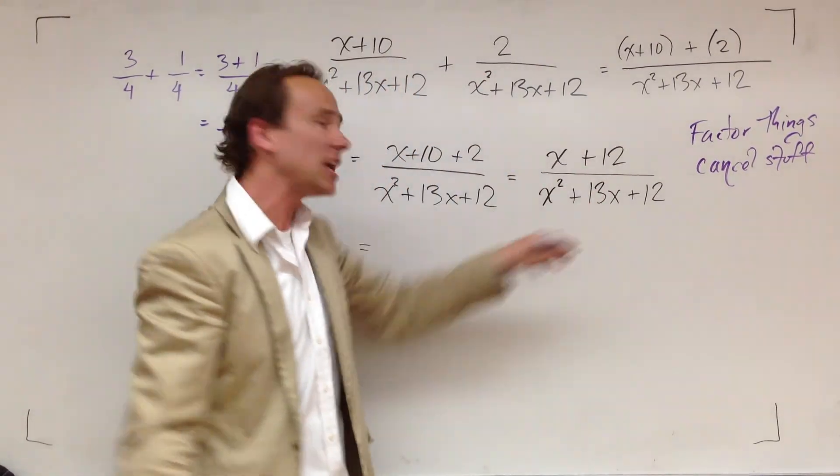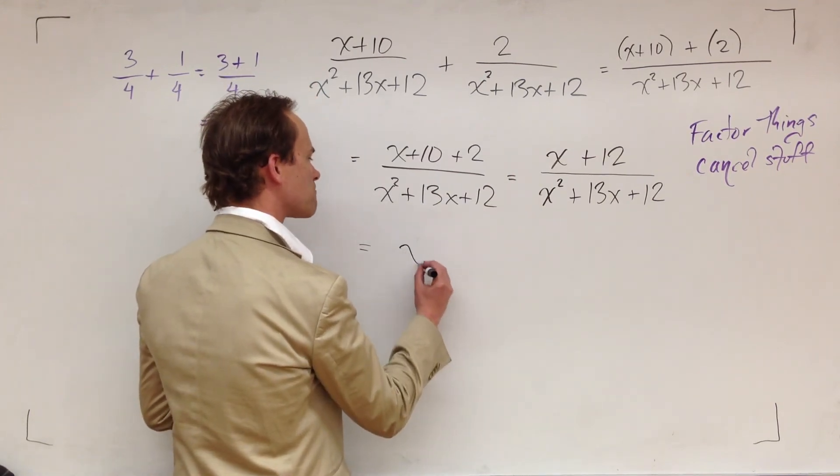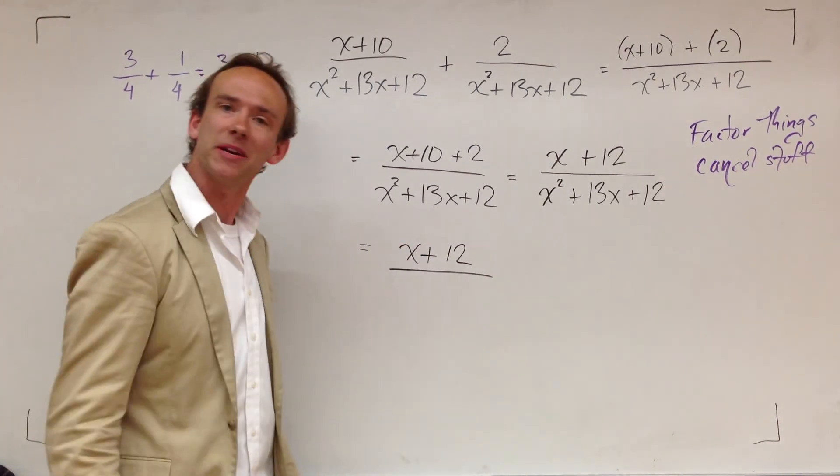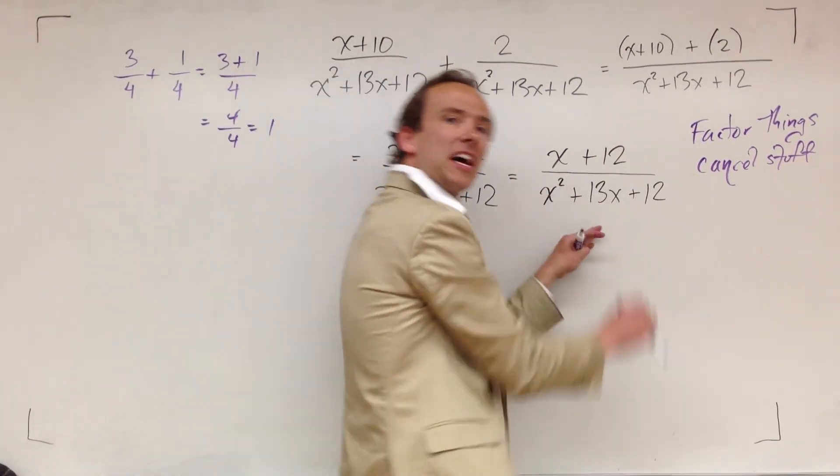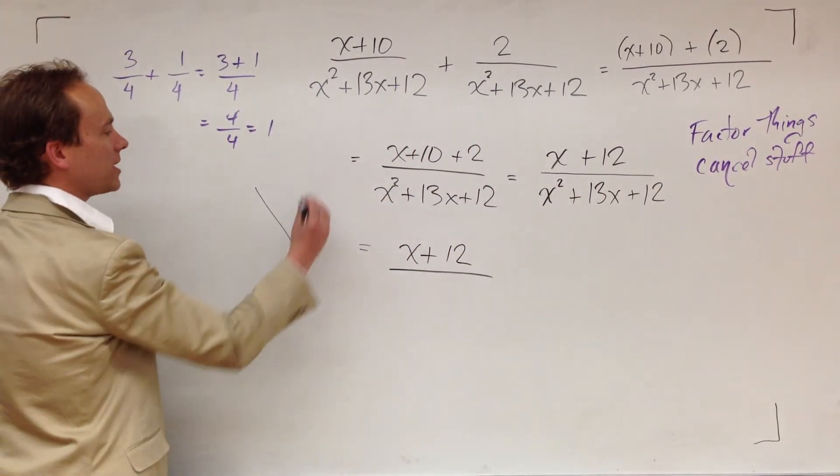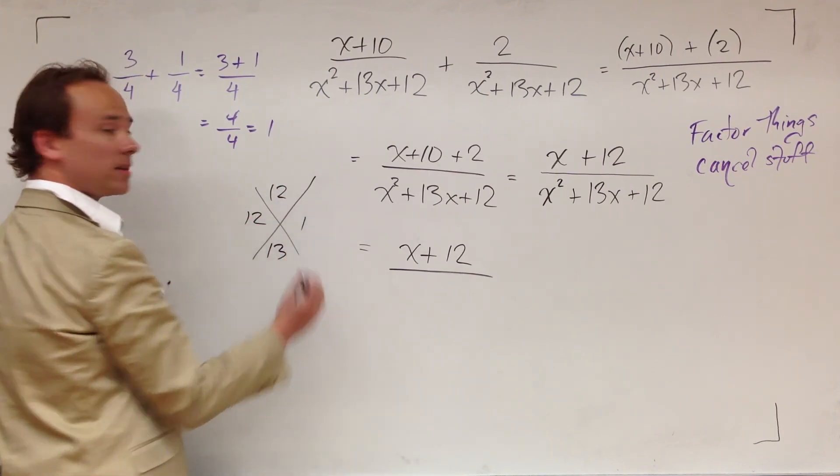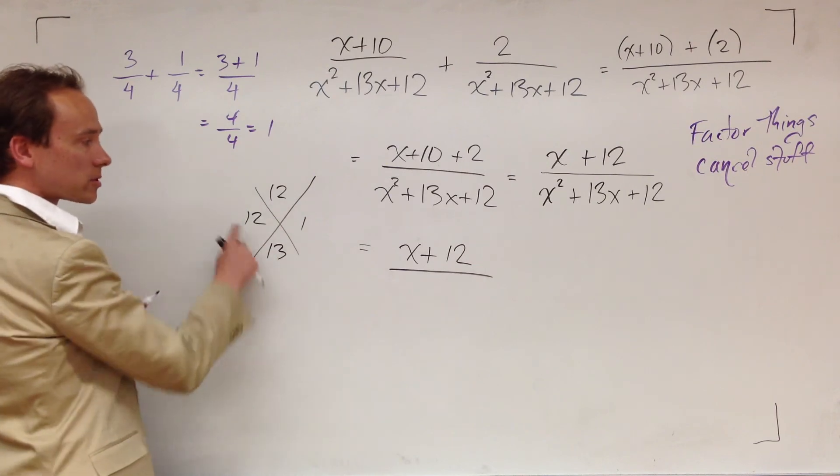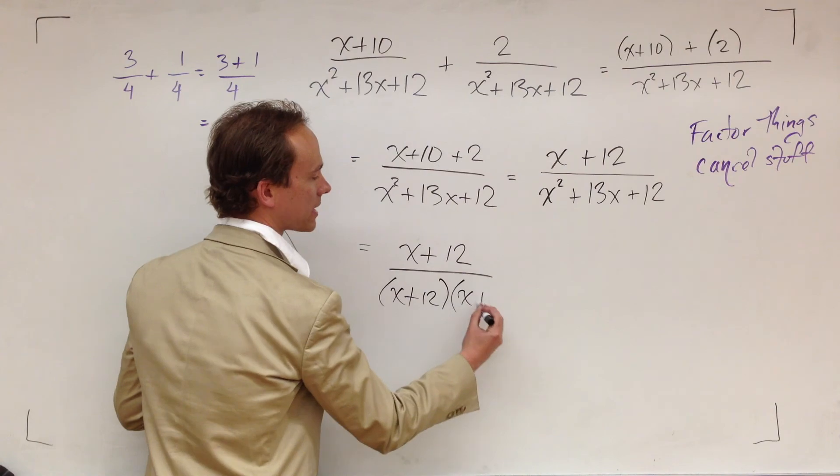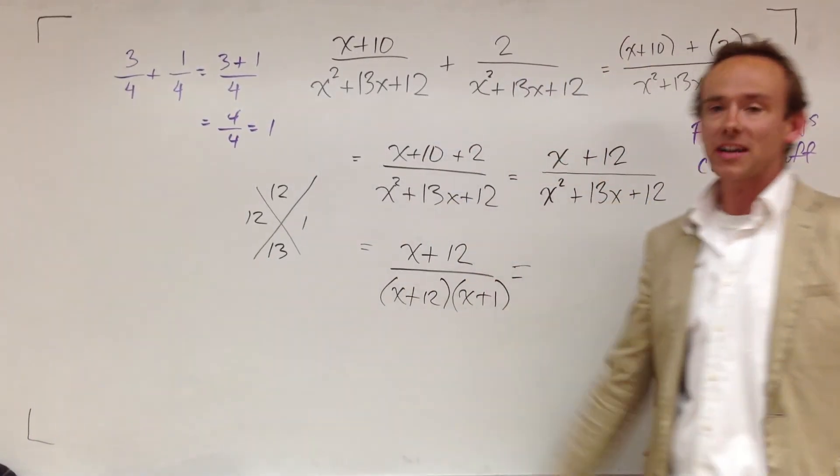I'm not going to worry about factoring the denominator because I'm starting on the numerator. I'm looking at x plus 12 and I'm saying, can't factor that any further. Now I'm going to focus on the denominator. This is a trinomial, so I'm going to hit it with an x marks the spot. The solution to that is 12 and 1 because 12 times 1 is 12, 12 plus 1 is 13. We got x plus 12 over x plus 1. It's money. Now I factored everything.